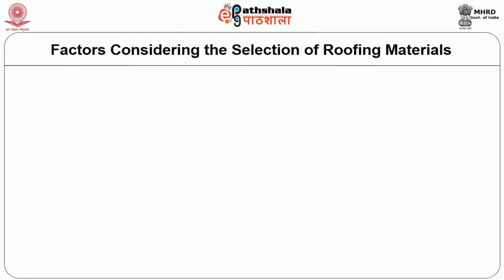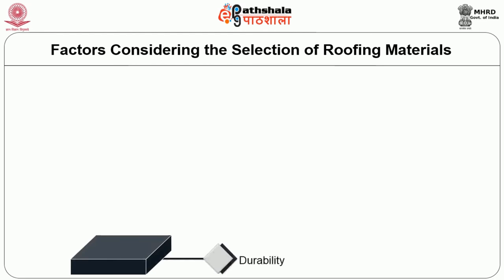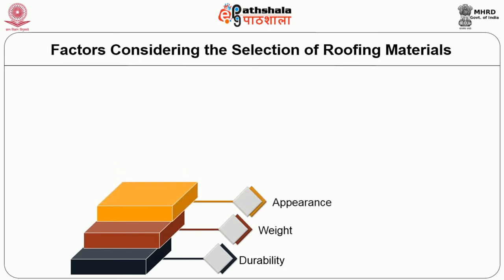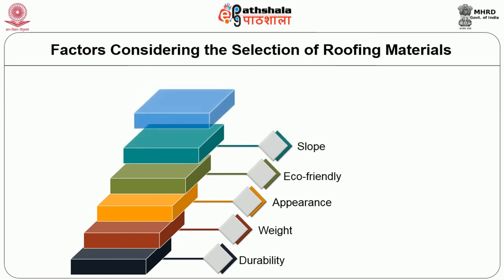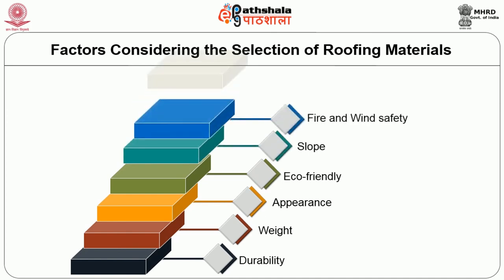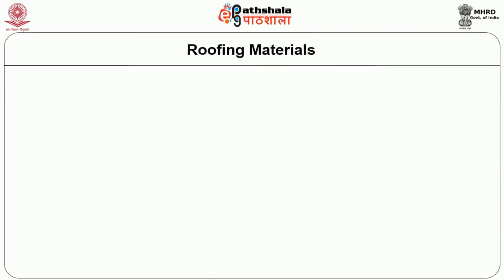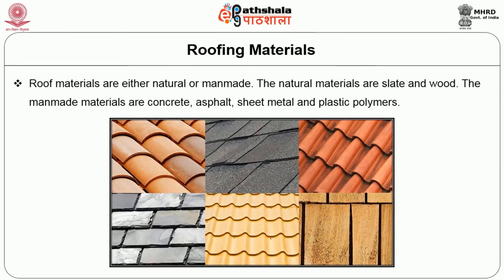Factors to be considered for the selection of roof materials include durability, weight, appearance, eco-friendliness, slope, fire safety and cost. Roof materials are either natural or man-made. Natural materials are slate and wood. Man-made materials are concrete, asphalt, sheet metal and plastic polymers.